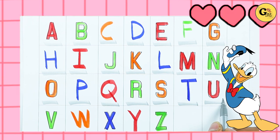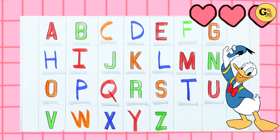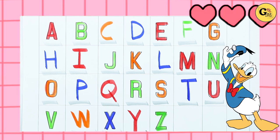U. U for umbrella. V. V for van. W. W for watch. X. X for xylophone. Y. Y for yak. Z. Z for zebra.